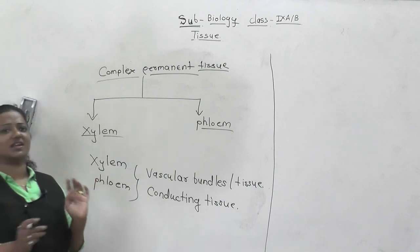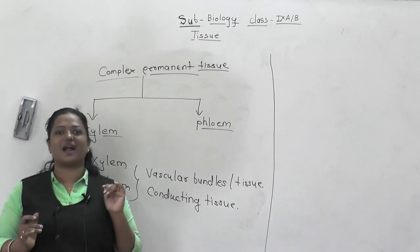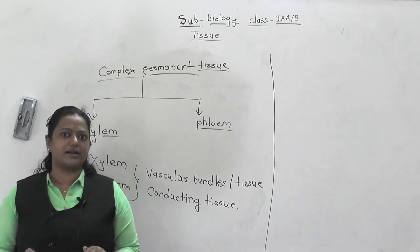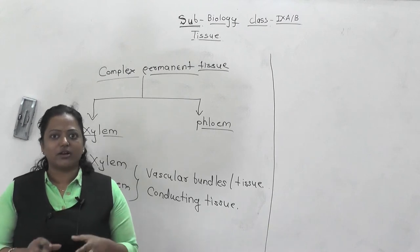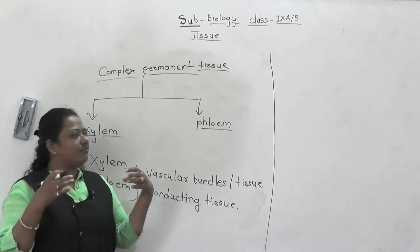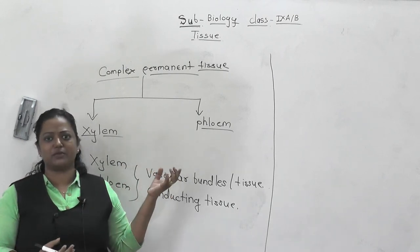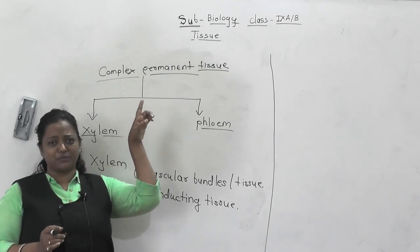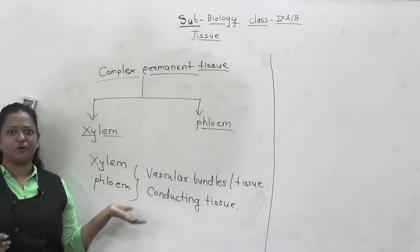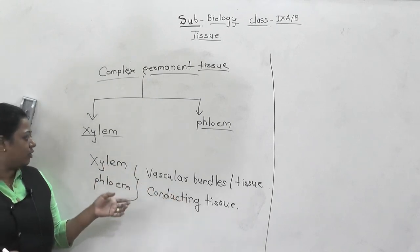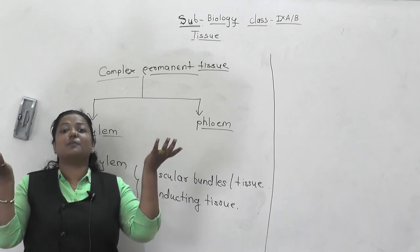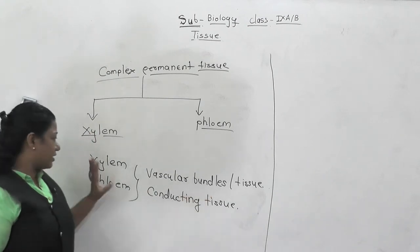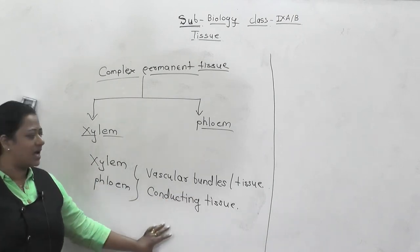Xylem and phloem are also said to be the plumbing system of a plant. Just like in a huge building where the water tank is stored in the ground and water is drawn through pipes reaching every apartment through small channels - in this same manner, xylem and phloem work together as the plumbing system of a plant.